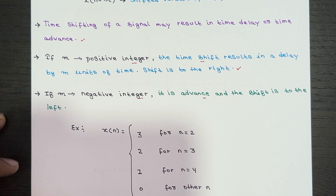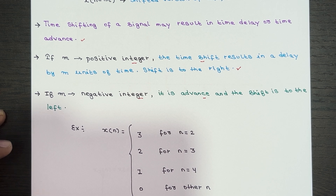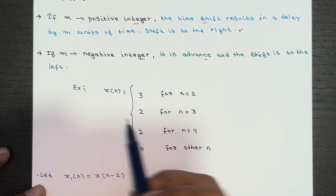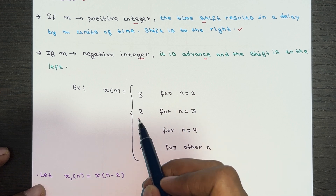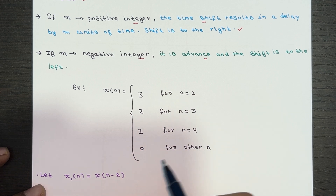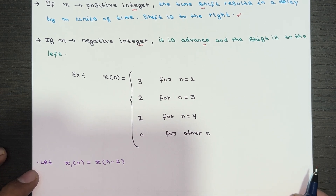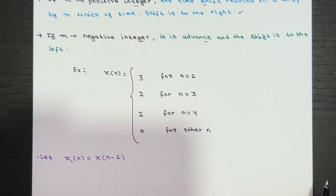To really grasp the concept of time delay and time advance, let's take a look at some examples. Suppose I have a signal X of n, where X of n equals 3 for n equals 2, 2 for n equals 3, 1 for n equals 4, and 0 for all other n. I want to perform the time shift operations.